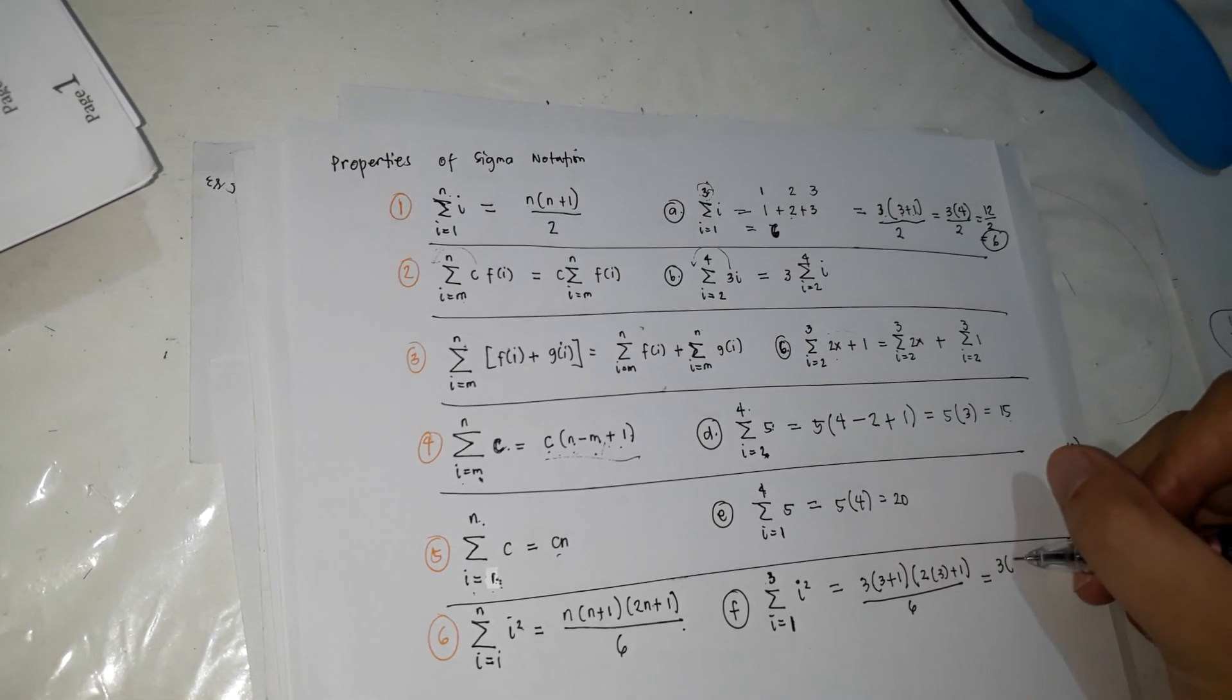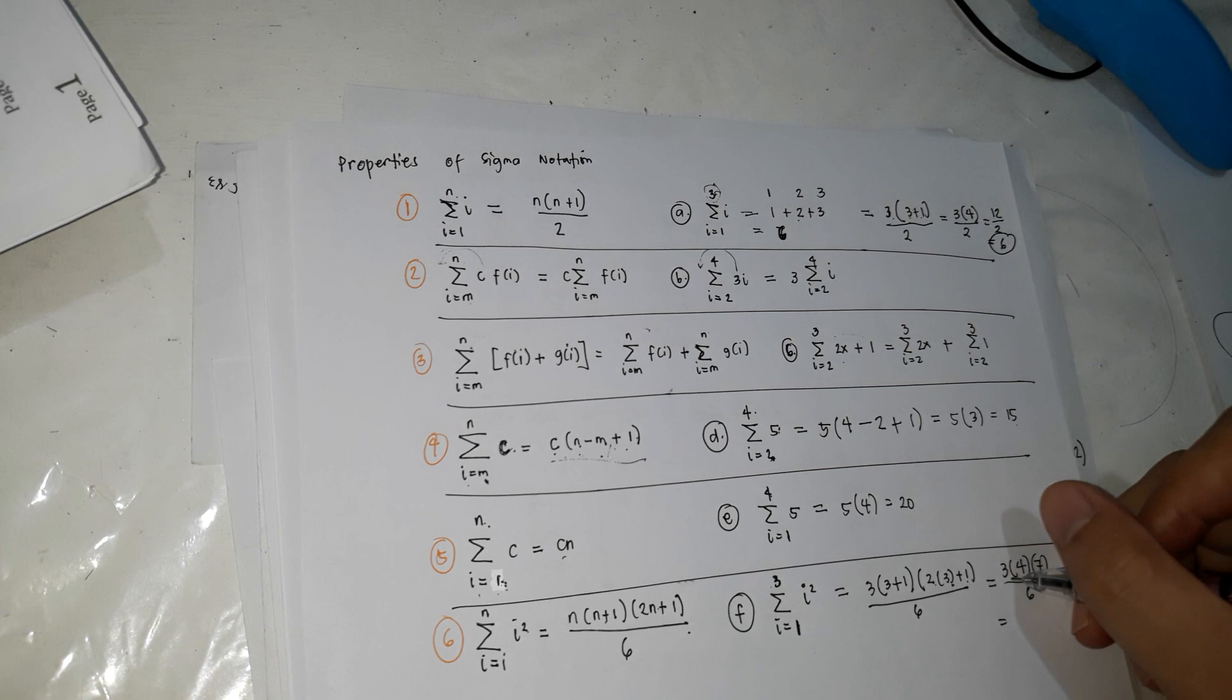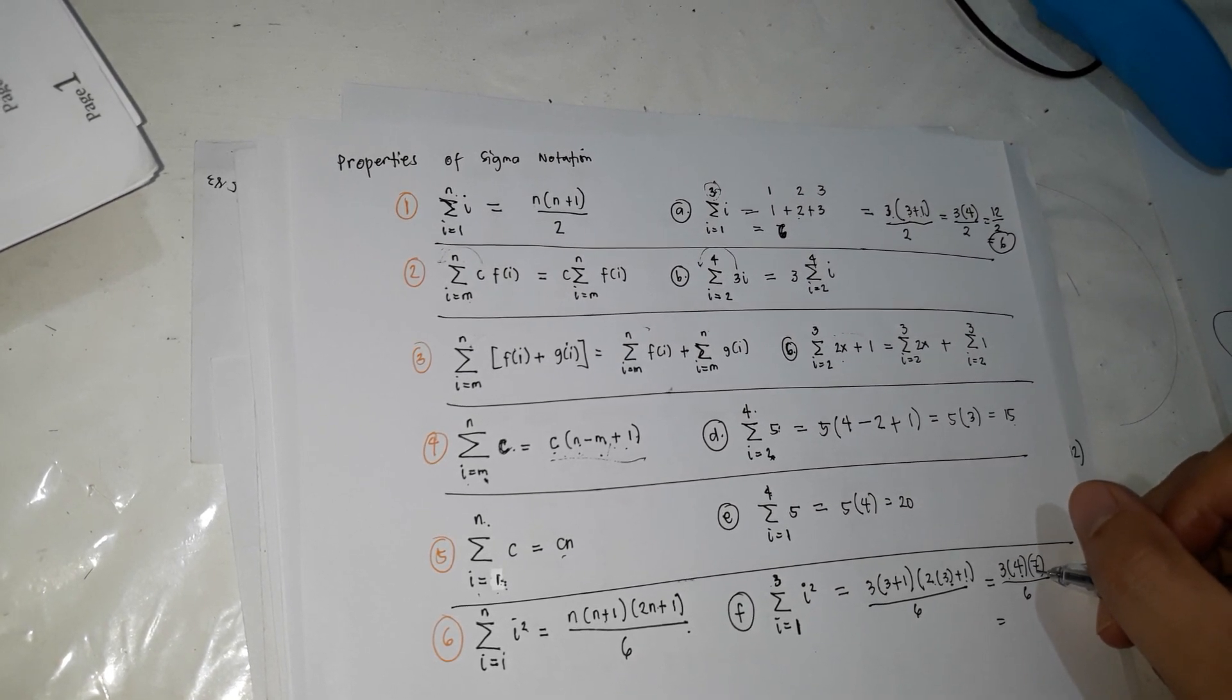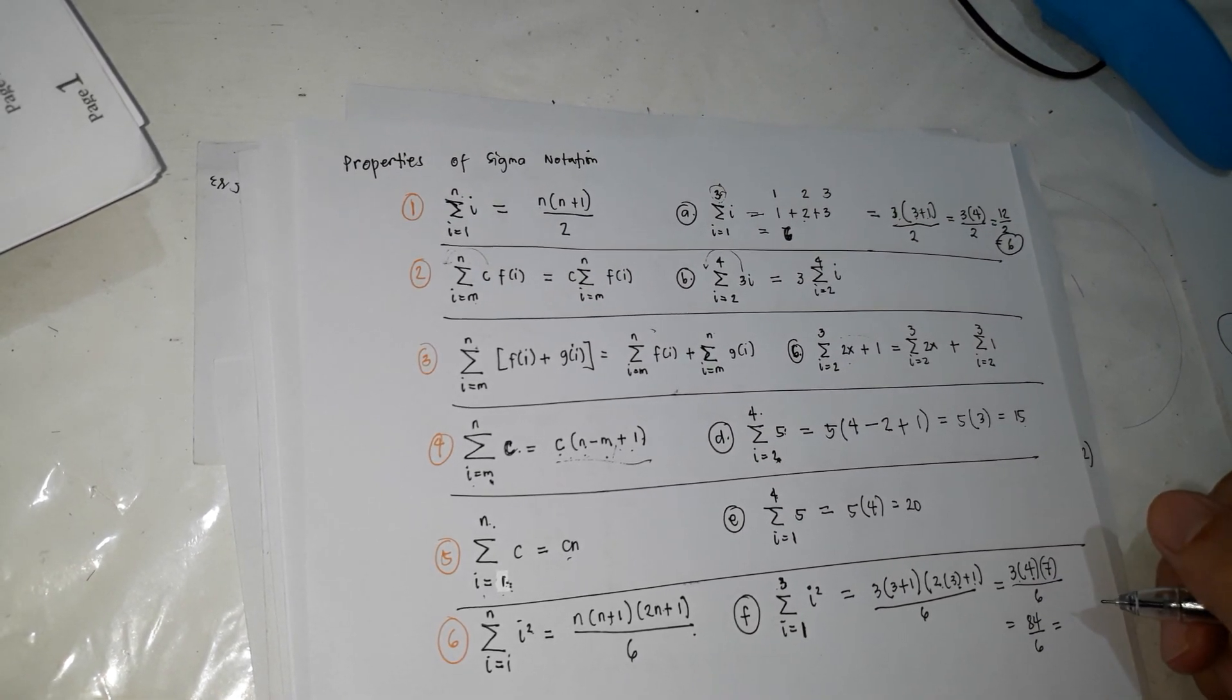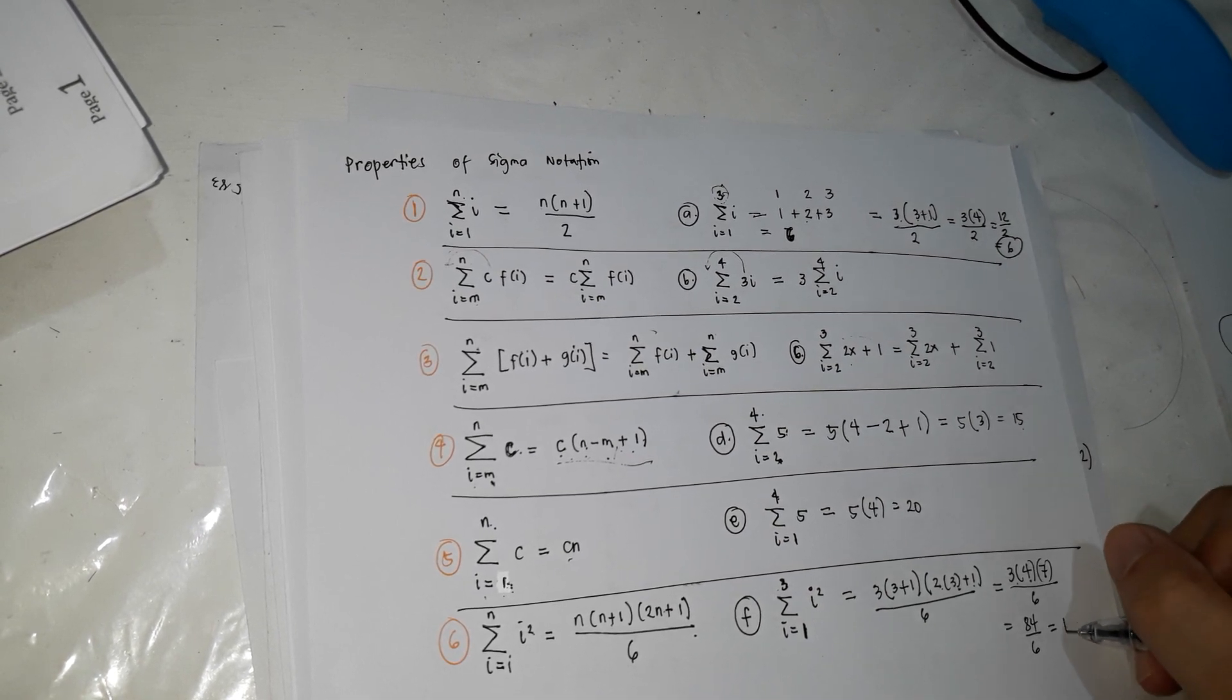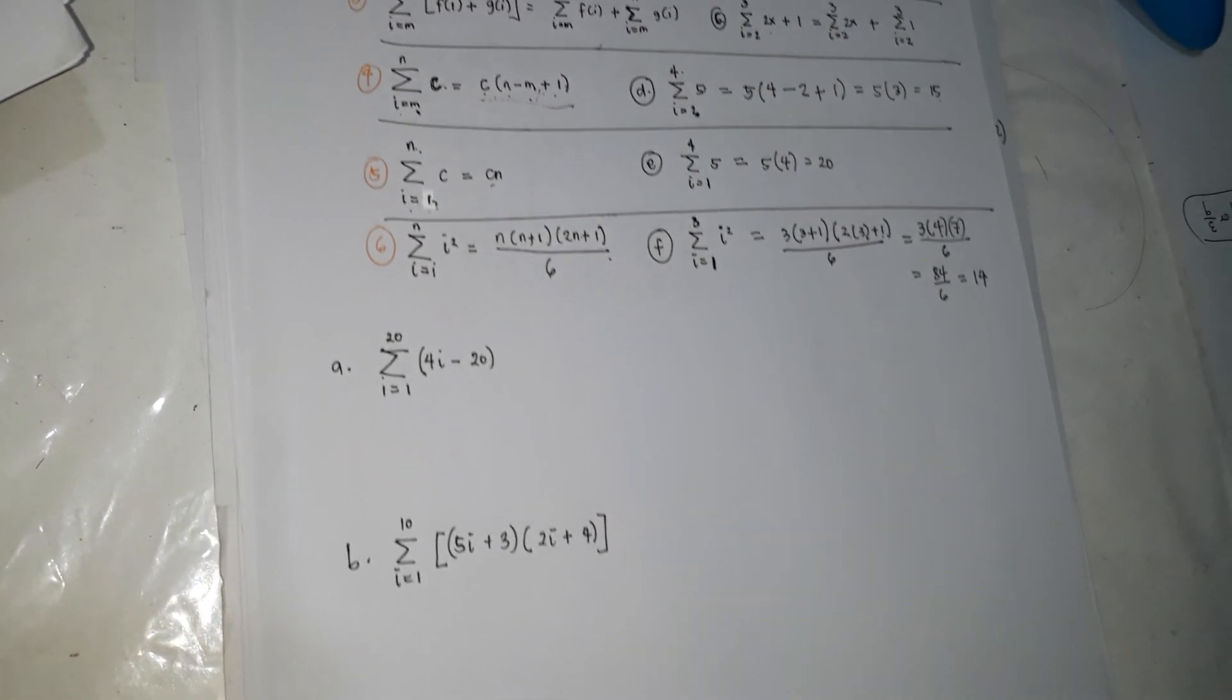So we can solve this, 3, 3 plus 1, 4, 2 times 3, 6 plus 1, 7, over 6 is equal to 3 times 4, 12, 12 times 7, that's 70 plus 14, 84 over 6, 84 over 6 is equal to 14. So that's how it is.